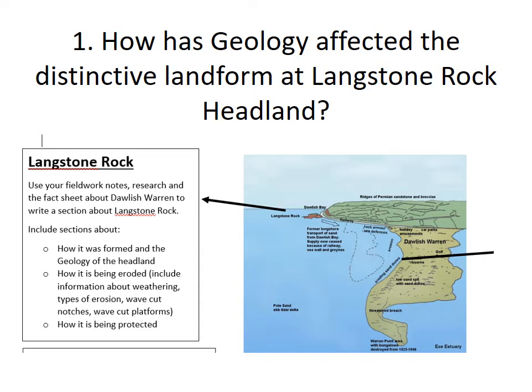Question one is: how has geology affected the distinctive landform at Langstone Rock? On the map, at the top left-hand corner there's an arrow pointing to Langstone Rock, the headland, which is made up of Devonian sandstone. You hopefully have written quite a lot of notes on this from the video I made when we were actually at Dawlish Warren last week. So you need to write a summary.